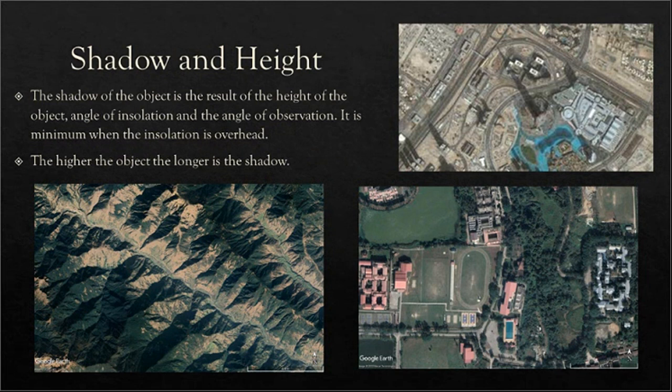Coming to the next element, it is shadow. Shadow is basically the result of the height of an object over the surface of the earth, the angle of insolation of the sun, and the angle of observation. These three things result in the occurrence of shadow in an imagery. Shadow is minimum when the insolation is overhead and the angle of observation is also straight overhead. It is highest in higher objects and when the angle of insolation or angle of observation is slanting.